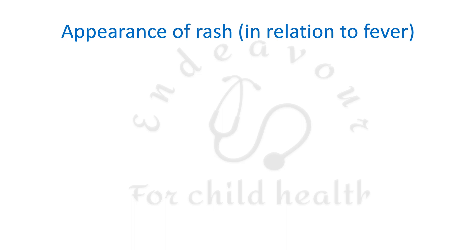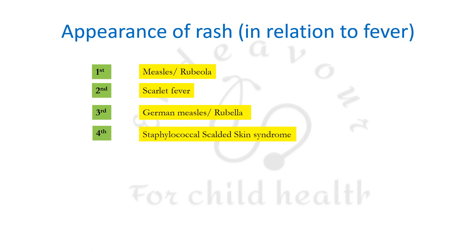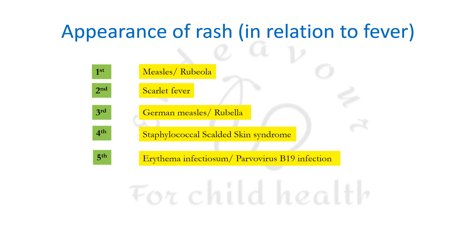Traditionally, fever with rash was classified based on the day of appearance. The first day disease was measles or rubella. The second disease was scarlet fever, caused by Streptococcus pyogenes. The third disease was German measles or rubella. Fourth disease was staphylococcal scalded skin syndrome, caused by staphylococcal strains that make epidermolytic or exfoliative toxin. Fifth disease is erythema infectiosum, caused by parvovirus B19. Sixth disease was roseola infantum or exanthem subitum, caused by human herpes virus 6 or 7.